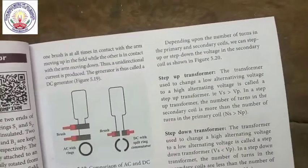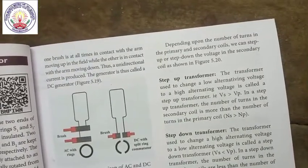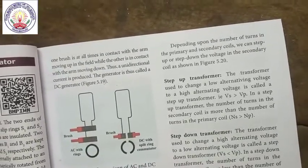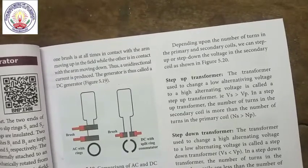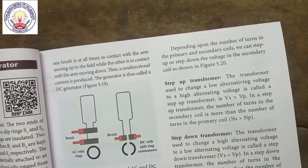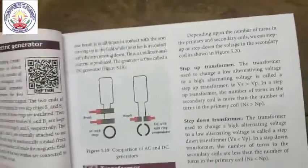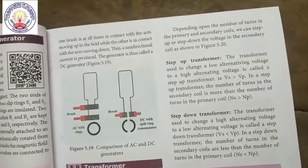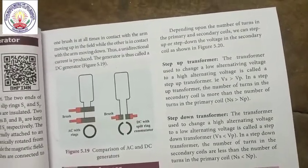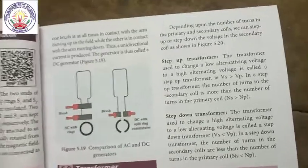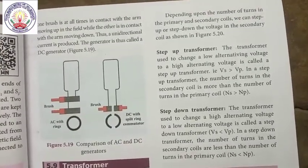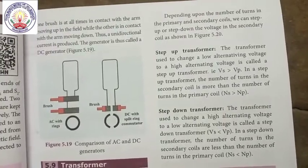Step-up transformer: The transformer used to change low alternating voltage to high alternating voltage is called a step-up transformer, where VS is greater than VP. In a step-up transformer, the number of turns in the secondary coil is more than the number of turns in the primary coil. Step-down transformer: The transformer used to change high alternating voltage to low alternating voltage is called a step-down transformer, where VS is less than VP. In a step-down transformer, the number of turns in the secondary coil is less than in the primary coil — Ns less than Np.